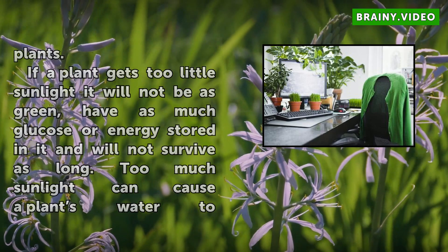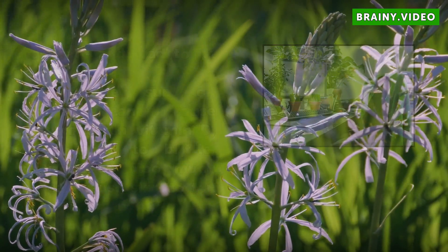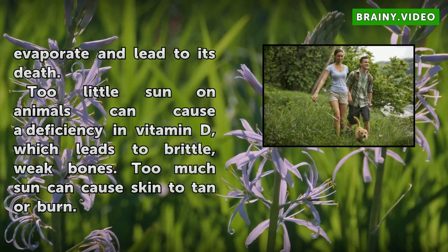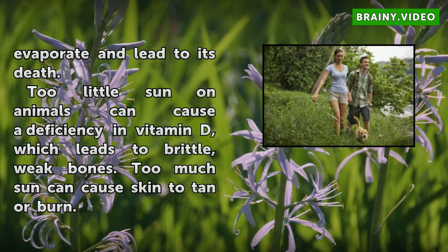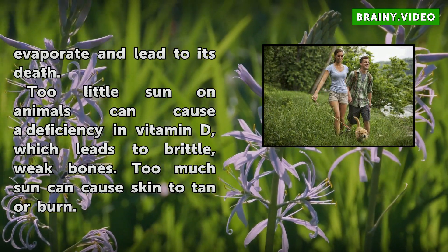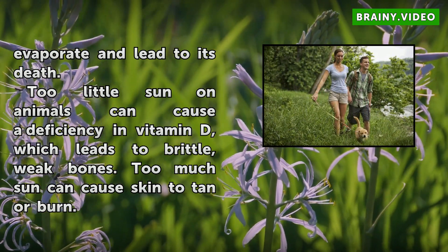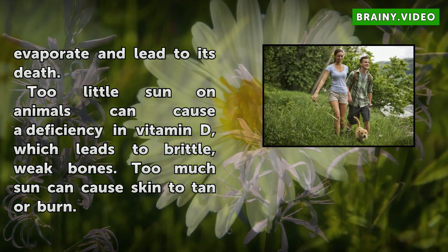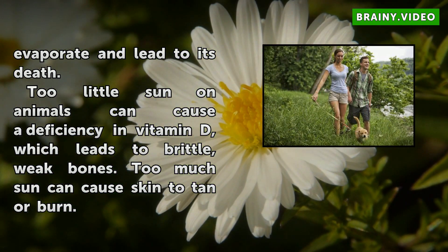Too little sun on animals can cause a deficiency in vitamin D, which leads to brittle, weak bones. Too much sun can cause skin to tan or burn.